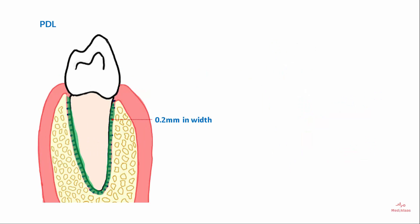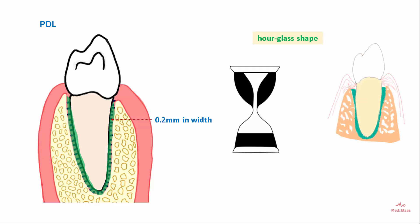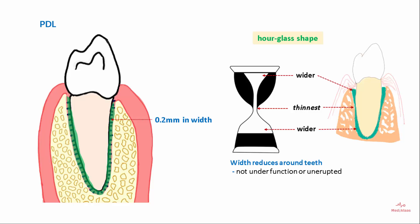The periodontal ligament is about 0.2 mm in width and has an hourglass shape. It is wider in the coronal one-third and the apical one-third, but thinnest at the middle one-third. Width of the PDL reduces around teeth that are not under function or are unerupted, and increases around teeth under hyperfunction or trauma from occlusion.